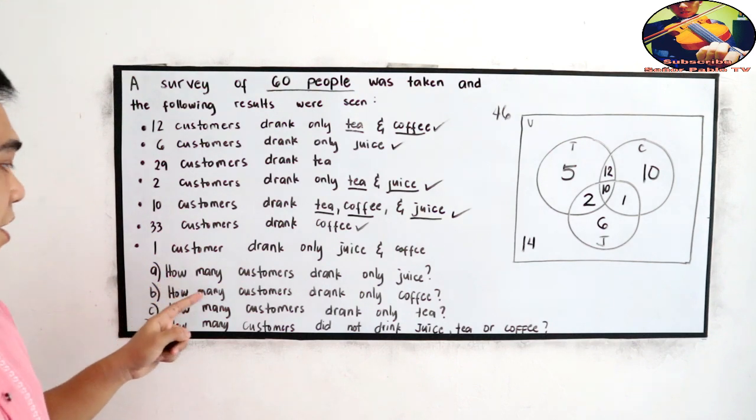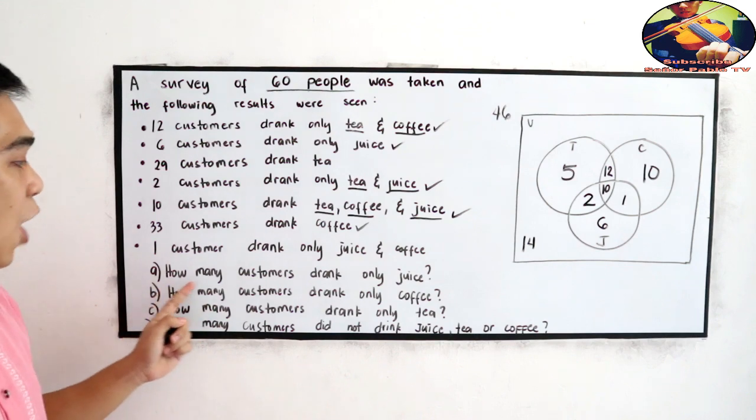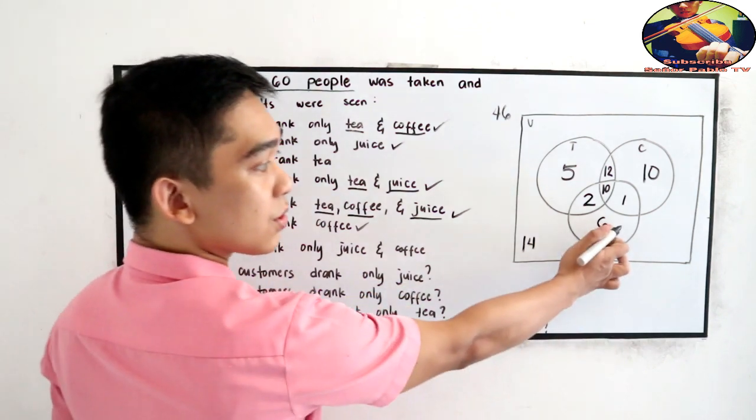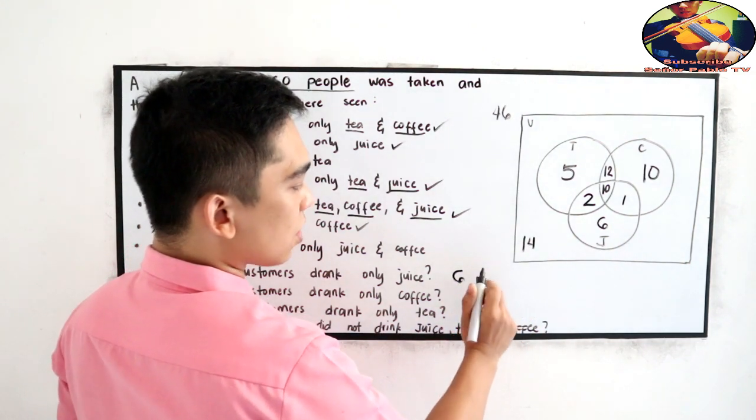Let's answer questions letter A, B, C, and D. A, how many customers drank only juice? Juice. So there are 6 people. 6 customers.